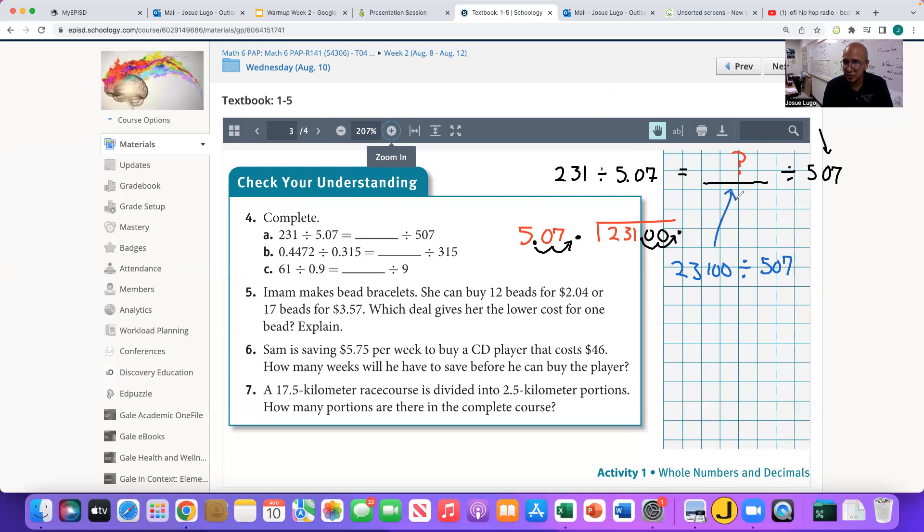this is going to read 23,100 divided by 507. But look, isn't that the number that I'm missing here? Because remember, these two expressions are going to be exactly the same. So my answer to number one is 23,100. Sorry, to number 4A. That's it.